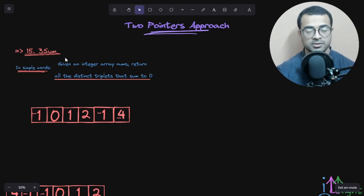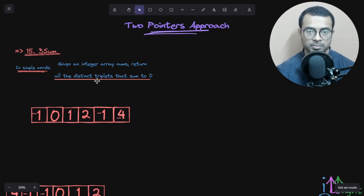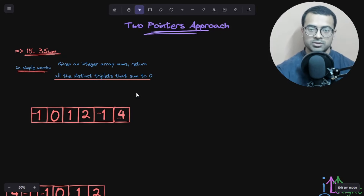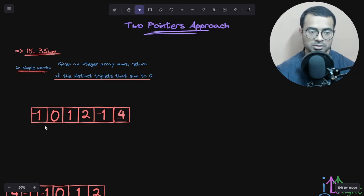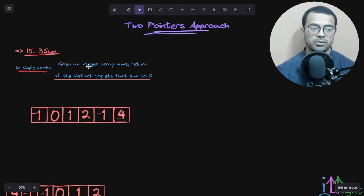Today we are going to solve question number 15, which is 3Sum on LeetCode. What this question is asking us: we have been given an integer array called nums, and our aim is to return all the distinct triplets from this array that sum to zero. We have to find pairs of three distinct integers that, when summed, give zero.